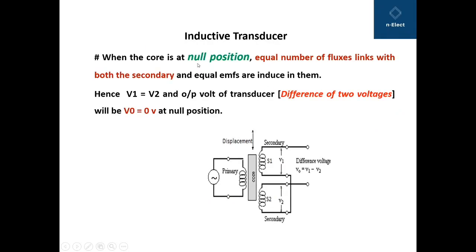When the core is at the null position — exactly at the center of the primary and two secondary windings — equal amounts of flux link with S1 and S2. Therefore V1 and V2 are equal, and the final output V0 equals V1 minus V2, which gives zero volts at the null position.